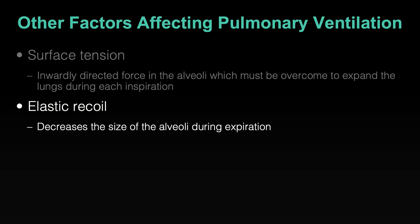Surface tension — that inward pull of the alveoli — probably accounts for about two-thirds of the elastic recoil: the tendency of the lungs to return to their original shape. There's still a third due to stretch of the lung tissue, stretch of the walls of the bronchioles or the alveolar sacs. Those want to return to their original shape after inspiration, and doing so helps push some air out. Pressure increases inside the alveolar sac and it follows the gradient out of the lungs, helping to push air out during exhalation.